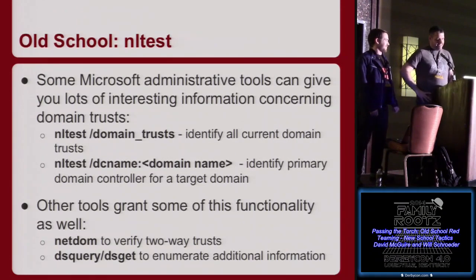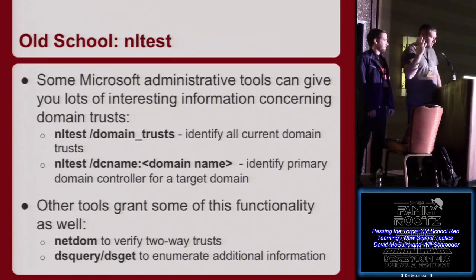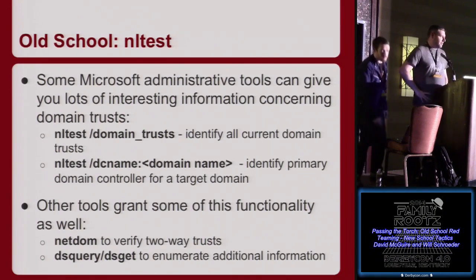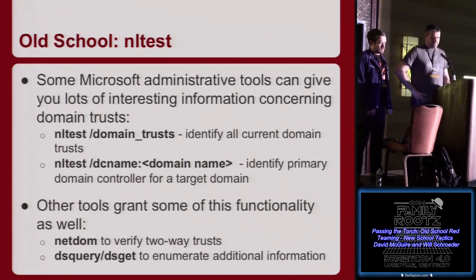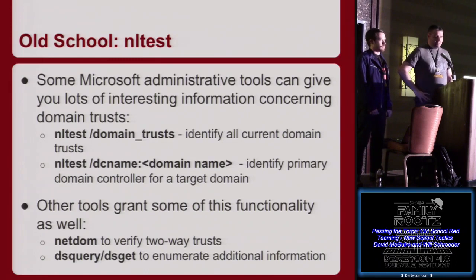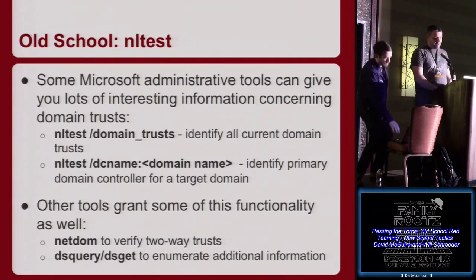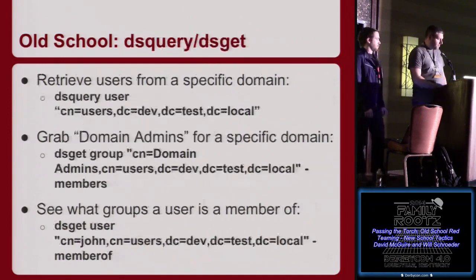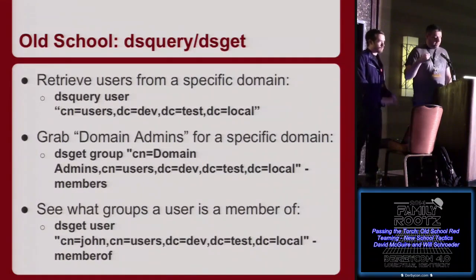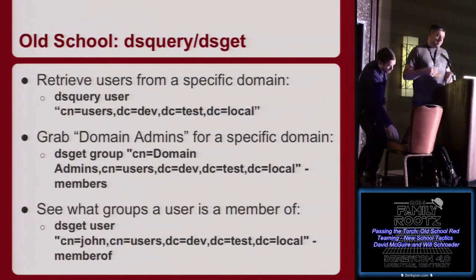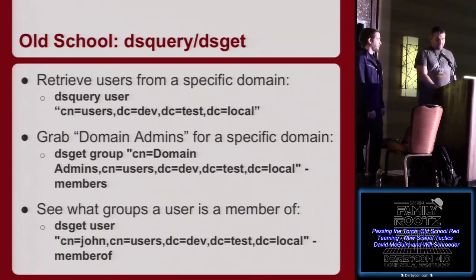How do we operationalize this? Microsoft has great tools to look at trust — nltest, built into most systems. You just do nltest, look at trusted domains, and it tells you. You can enumerate information in those other domains using nltest, netdom, dsquery, dsget. We actually use a different tool — adfind — in our demos. Here's an example of using dsquery and dsget across domain trust to pull user information and group information out of another domain, basically with native functionality.